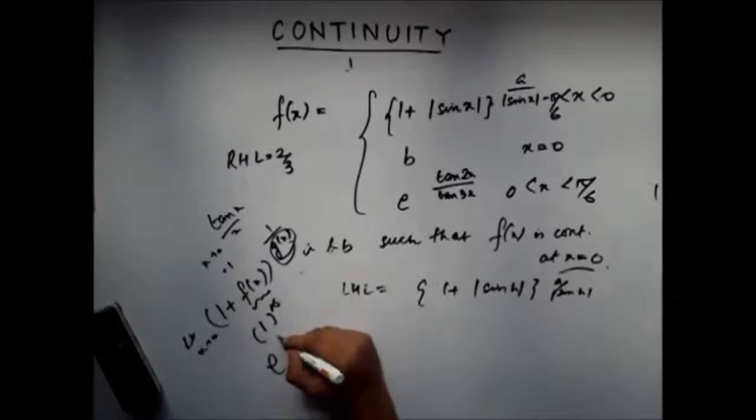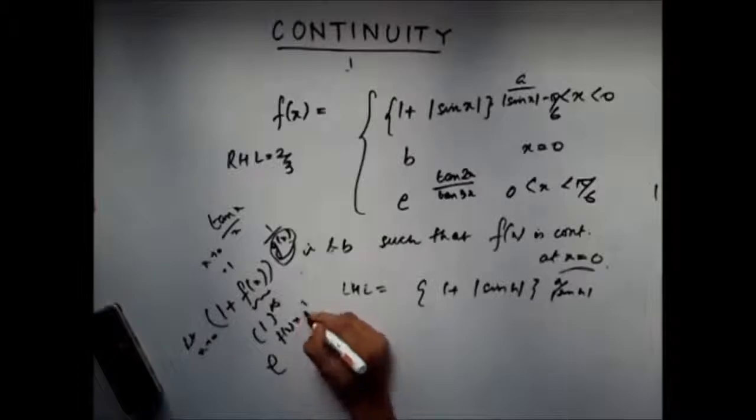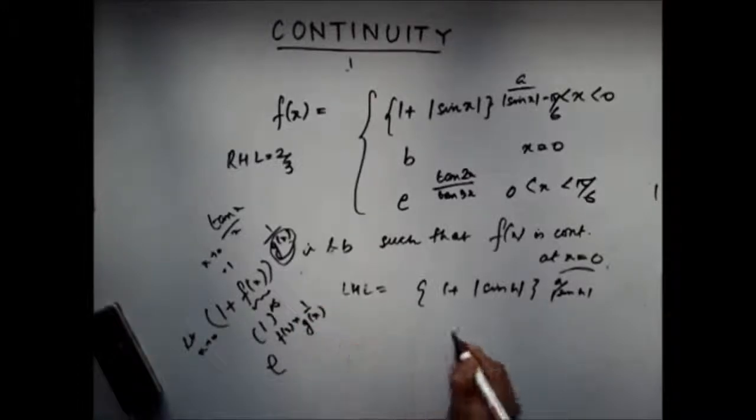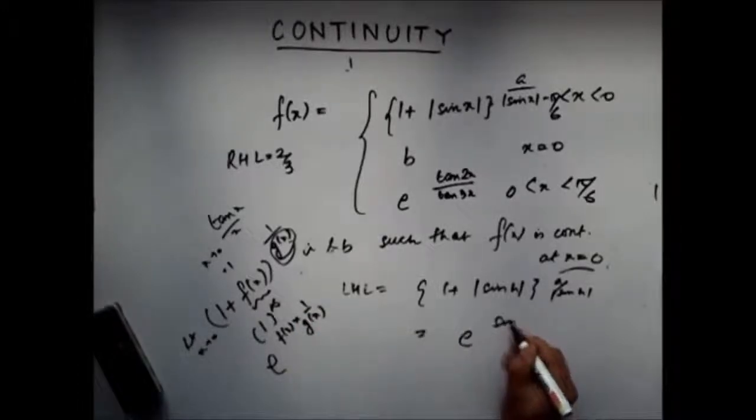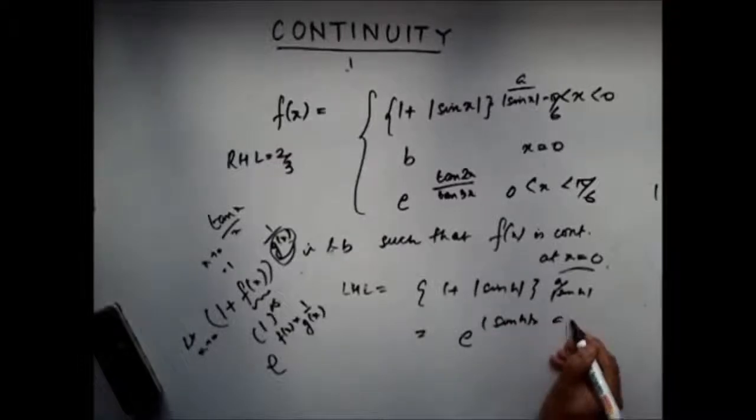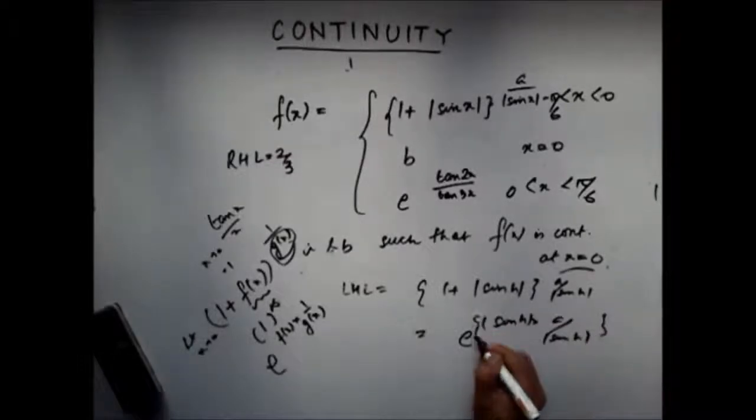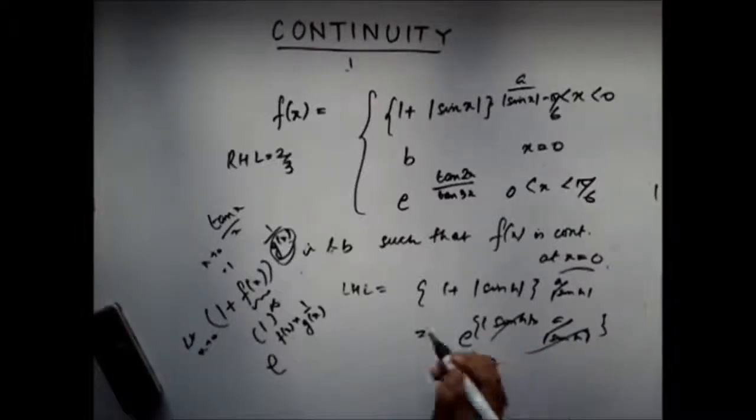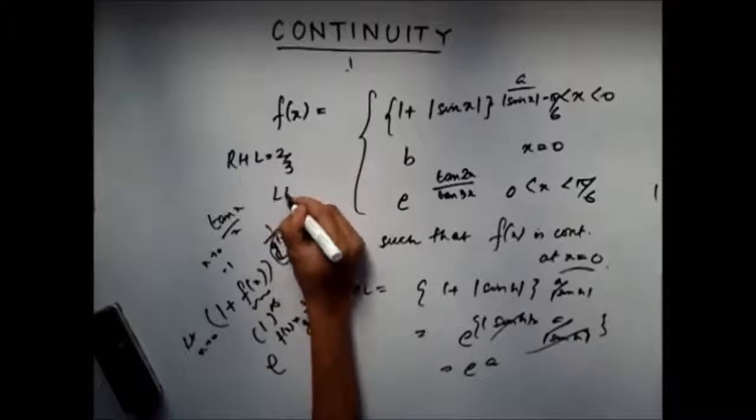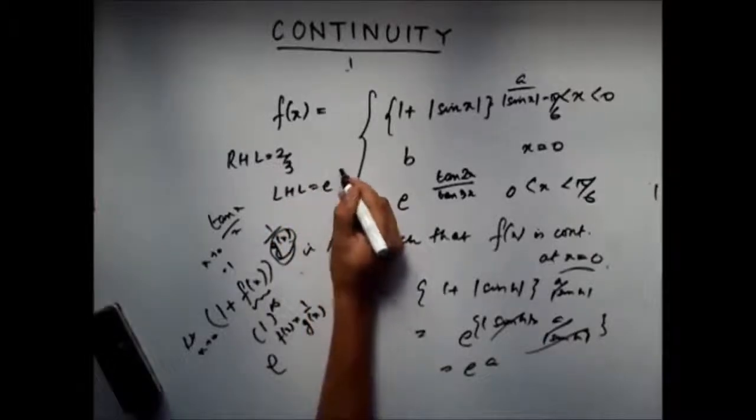So here the limiting value will be equal to e^(a |sin h| / |sin h|). This gets cancelled, you get e^a. So the left-hand limit is equal to e^a.